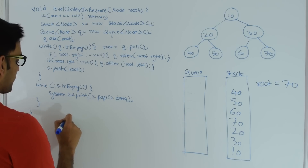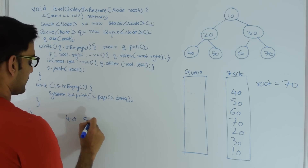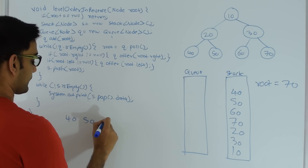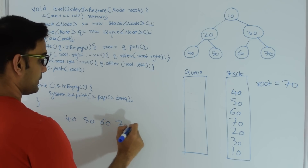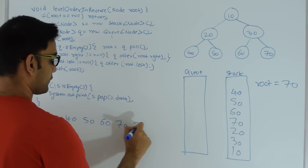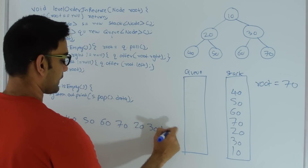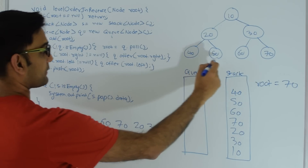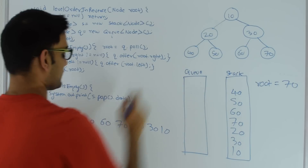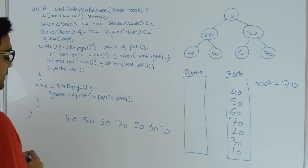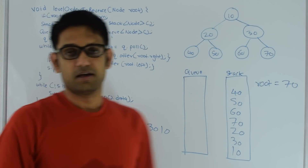The stack prints: 40, 50, 60, 70, 20, 30, and 10. This is my level order traversal in reverse.